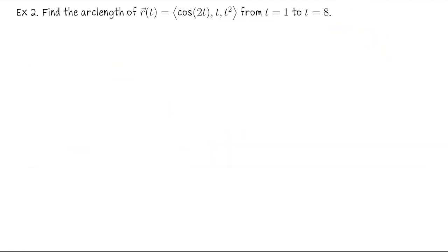Let's do a different example. So let's find the arc length of the parametric curve r of t equals cosine of 2t t t squared from t equals 1 to t equals 8. Okay, so we need the velocity vector, then we'll get the speed.